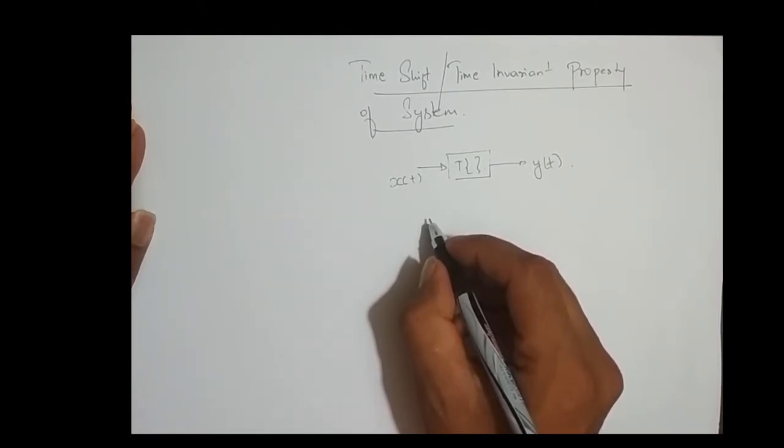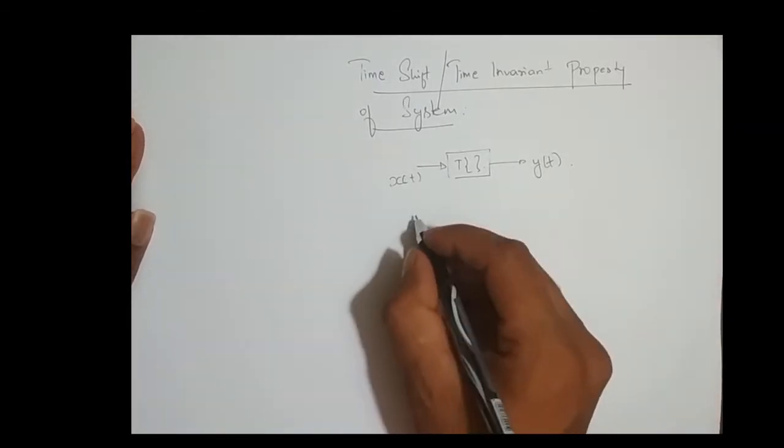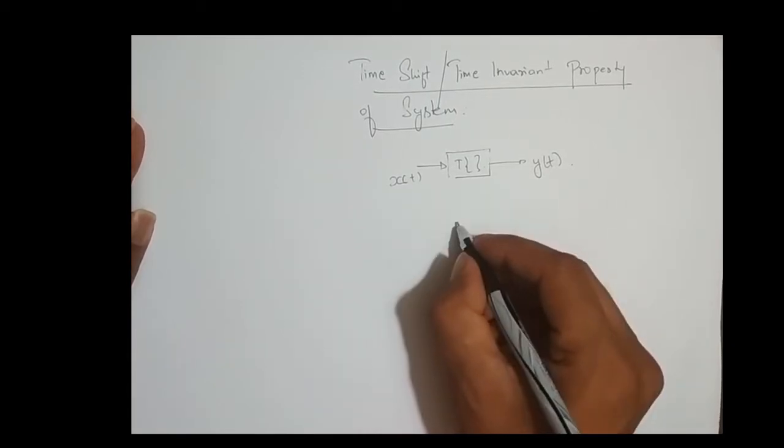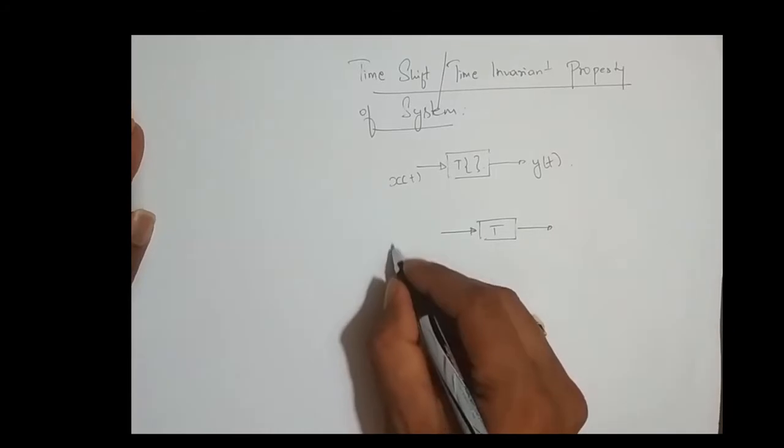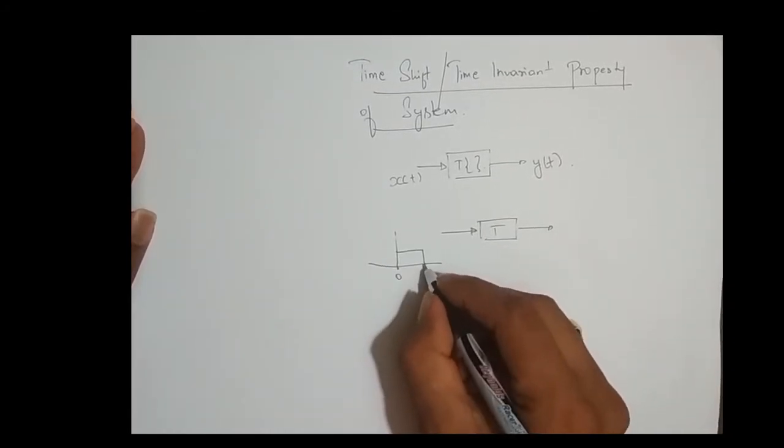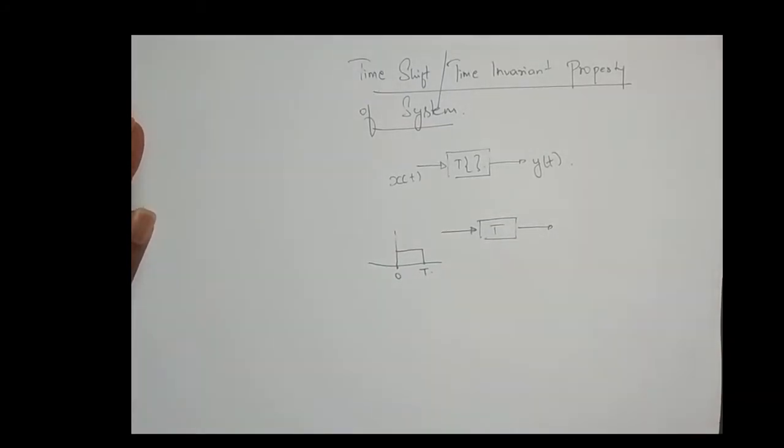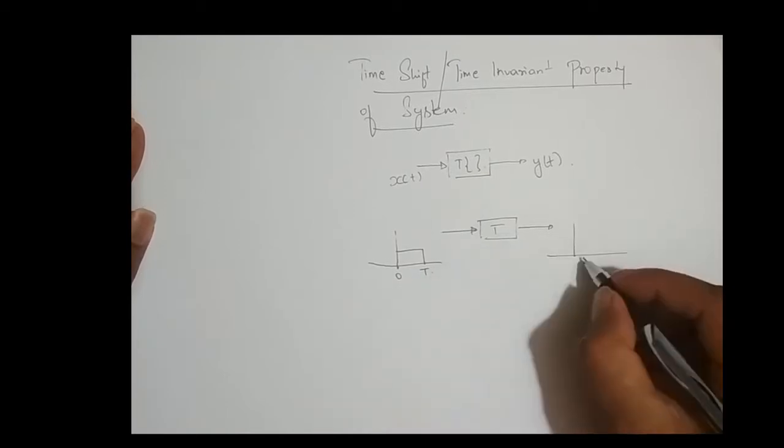Let me convince you graphically. Say I have a system T, and the input to this system is a rectangular pulse from zero to some value t, and it transforms this rectangular pulse to a triangular pulse.